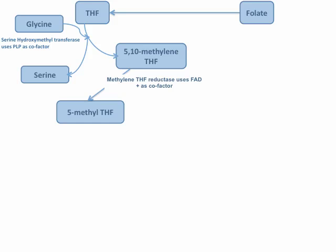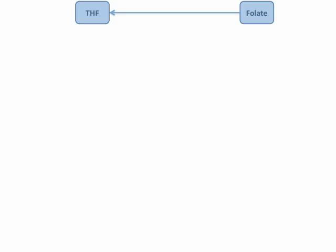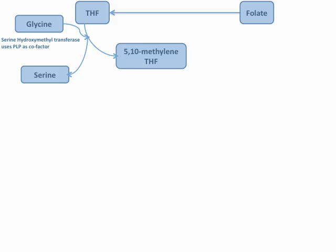The methyl group will then be moved with the assistance of cobalamin, or vitamin B12. If there isn't enough vitamin B12, this is where the methyl trap of folate occurs — the methyl group cannot be moved, and the cycle stops here.